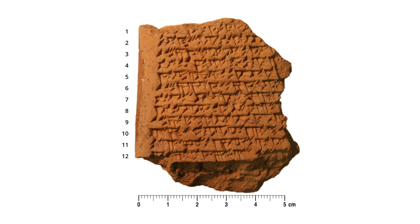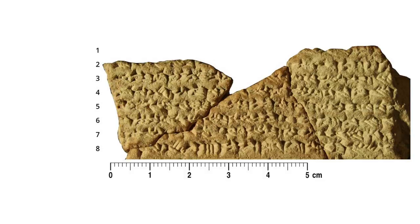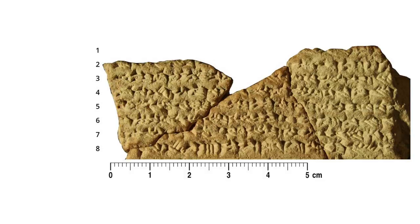Although the tablets show no actual drawings of trapezoids, the calculations demonstrate that the Babylonians were in effect computing the area under a curve to achieve an astronomical result.